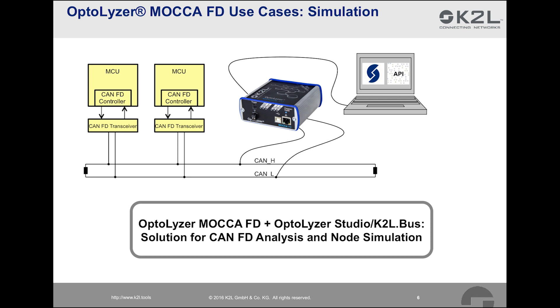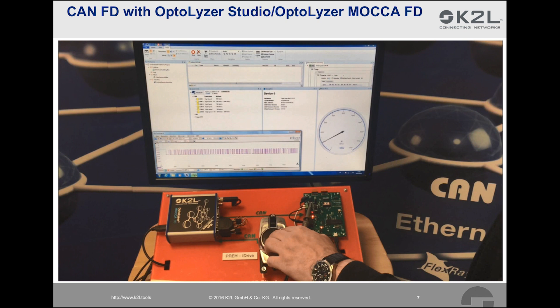We will start with Optalyzer Mokka-FD together with Optalyzer Studio. We can now see some screenshots of an expressive demo shown recently at a trade show. In the foreground, we see an Optalyzer Mokka-FD connected via CAN to a Prey iDrive and via CAN-FD to a CAN-FD evaluation board from Microchip. The Optalyzer Mokka-FD is also connected via USB to a PC running Optalyzer Studio. A Pico Technology oscilloscope attached to the Microchip evaluation board shows the CAN-FD frames transmitted over the bus. Optalyzer Studio shows the baud rate of the CAN-FD data phase, and the transmission speed during the data phase is changed with the help of the Prey iDrive. You can see that the frame duration shrinks with higher baud rates in the data phase.